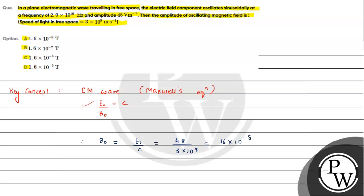which is 16×10^-8 Tesla, and we can write this as 1.6×10^-7 Tesla. The answer matches our option B. So I hope you understood the solution. All the best.